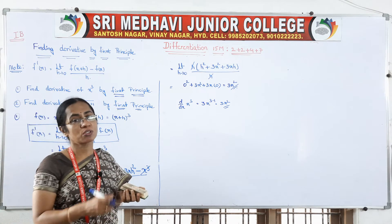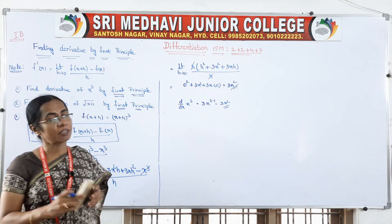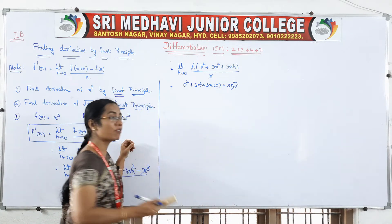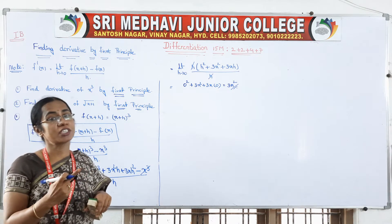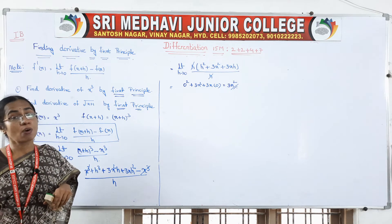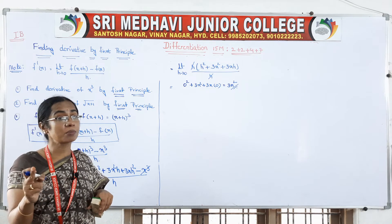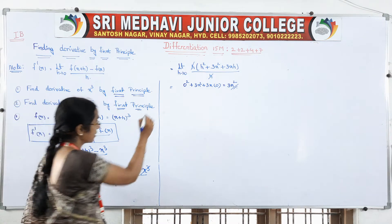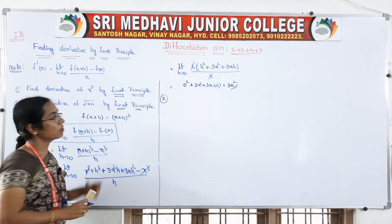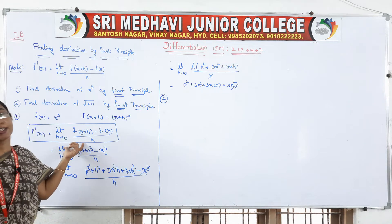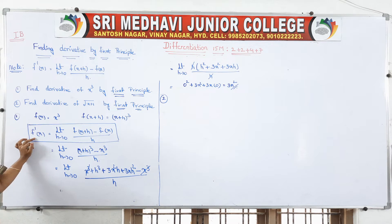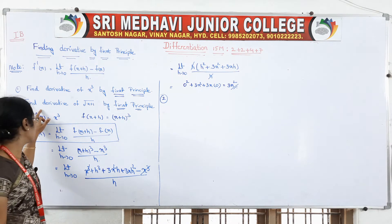The normal formula gives a 2-mark answer; first principle is a 4-mark question. Definitely you will have one question by first principle in your final examination — from differentiation you are going to get this as a 4-mark short answer. So practice this formula. Now come to the second question.